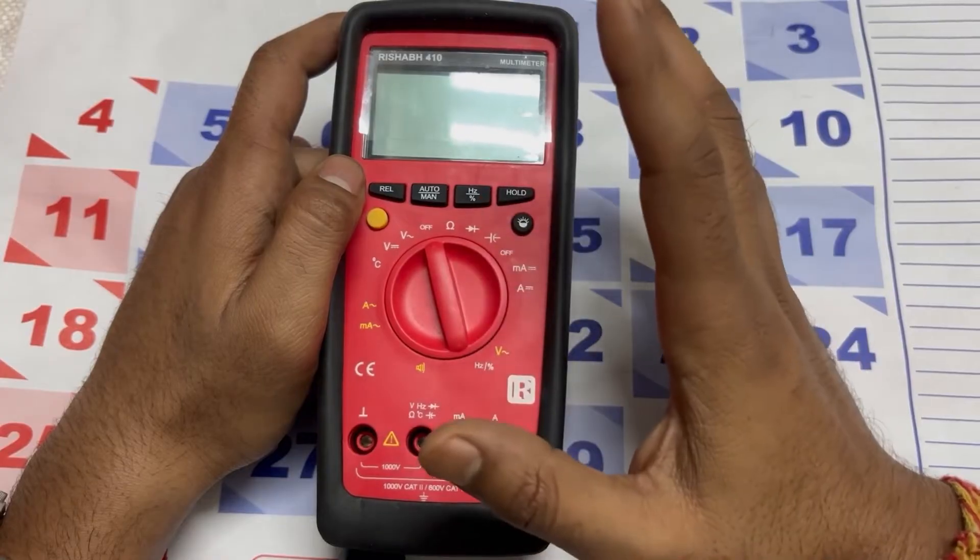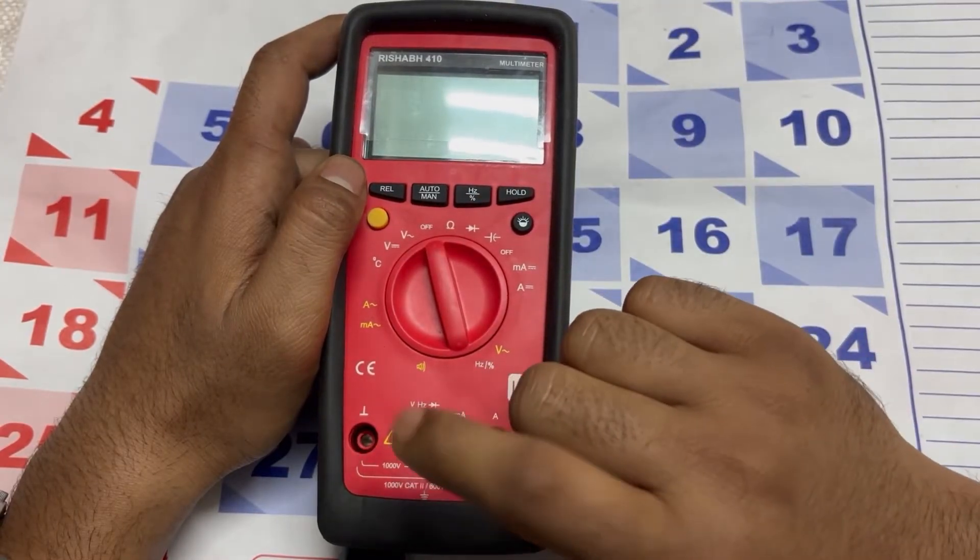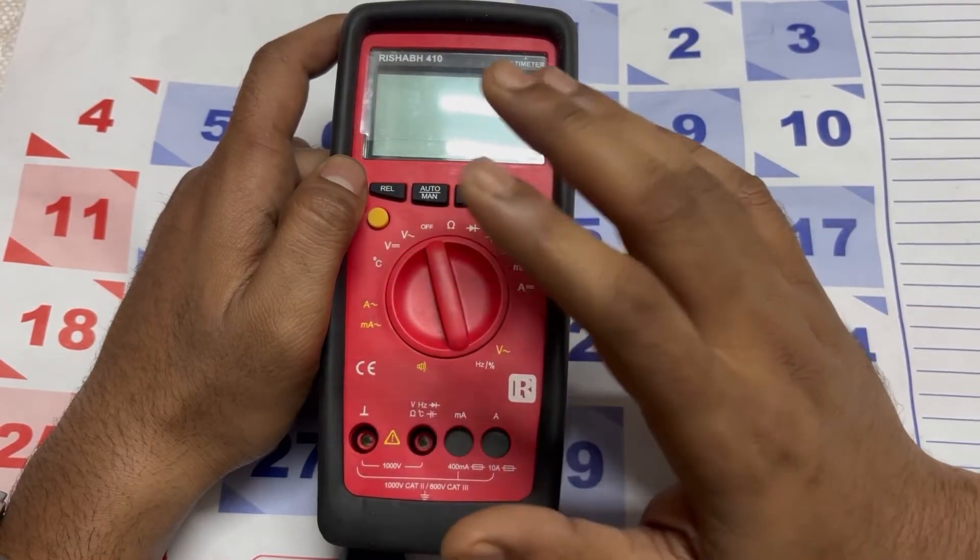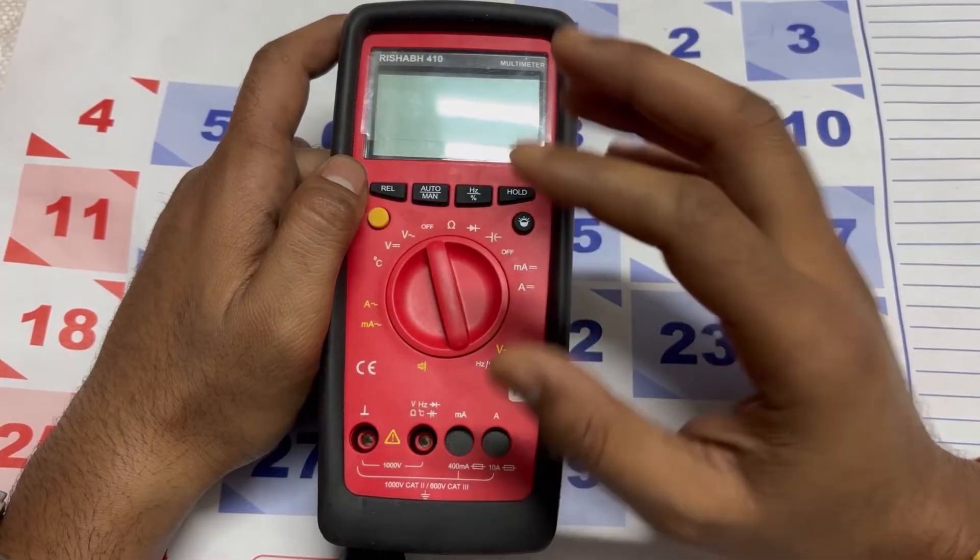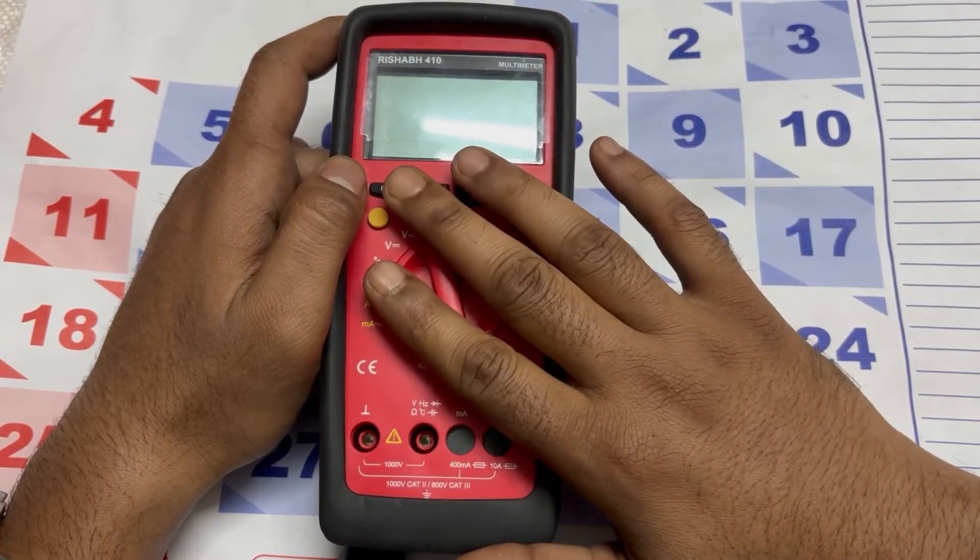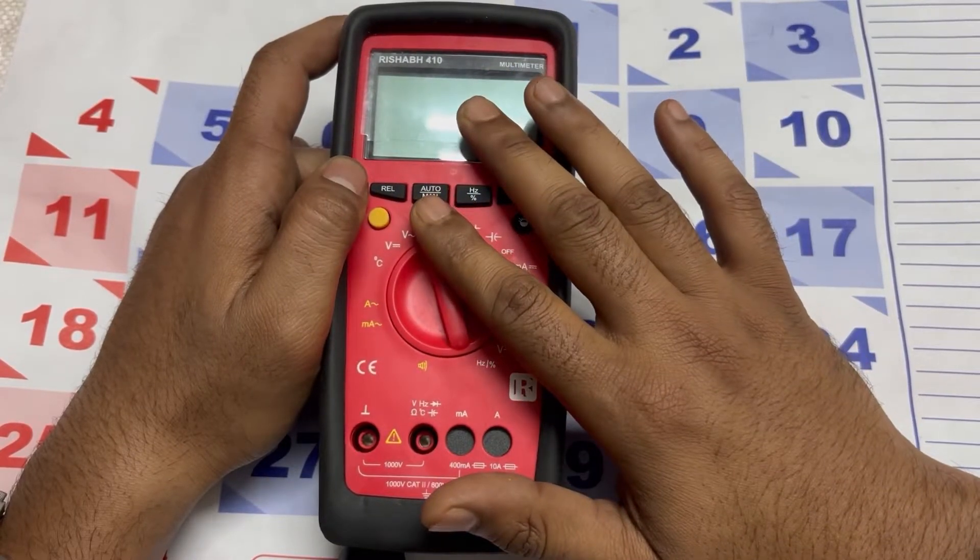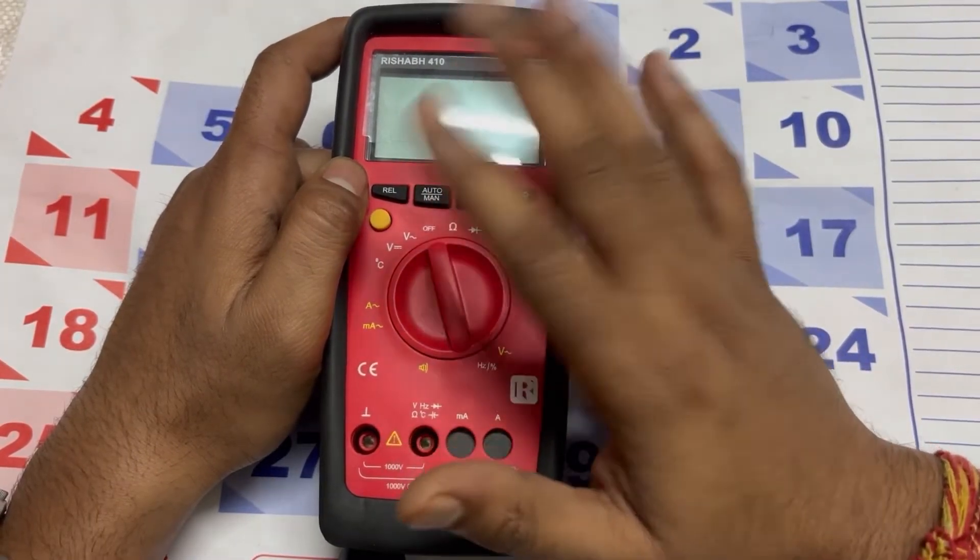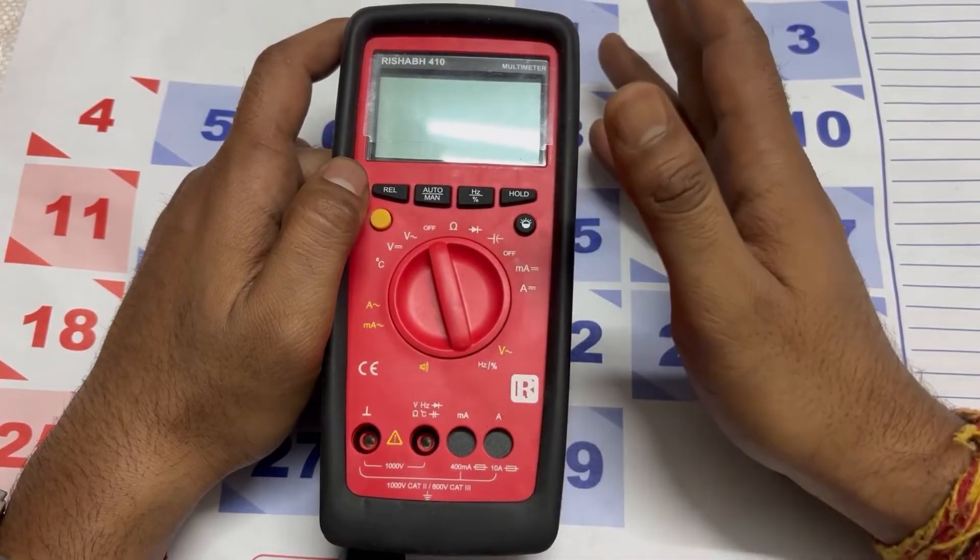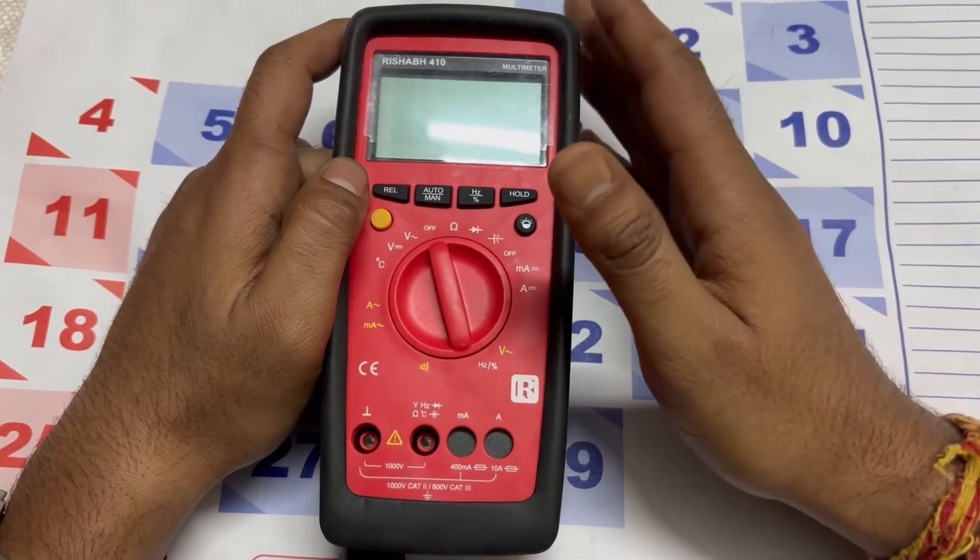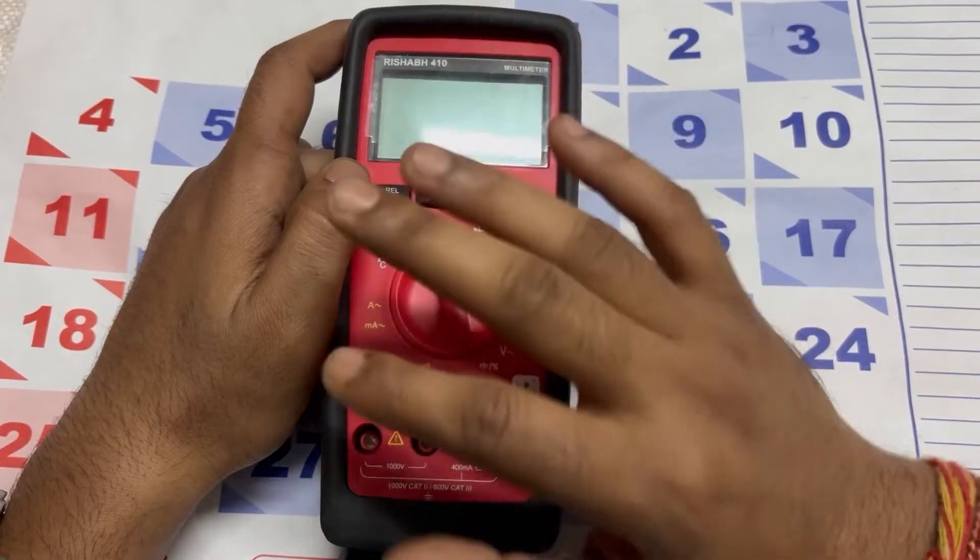You can see some ports here for connecting test leads or probes for different types of measurement. This multimeter RESERV 410 uses two AA batteries of 1.5 volt. The multimeter can measure both AC and DC currents. This helps in determining the amount of current flowing through a circuit, which is essential for troubleshooting and safety.